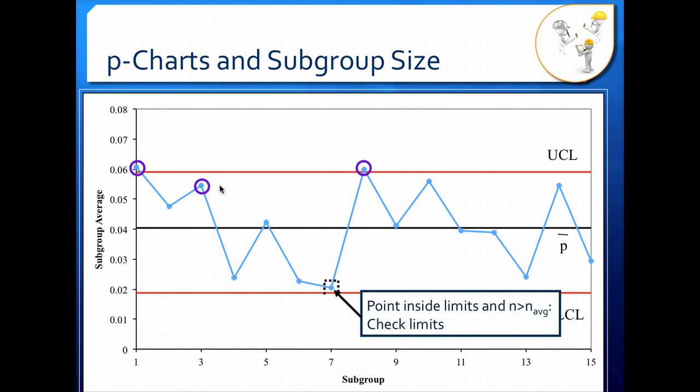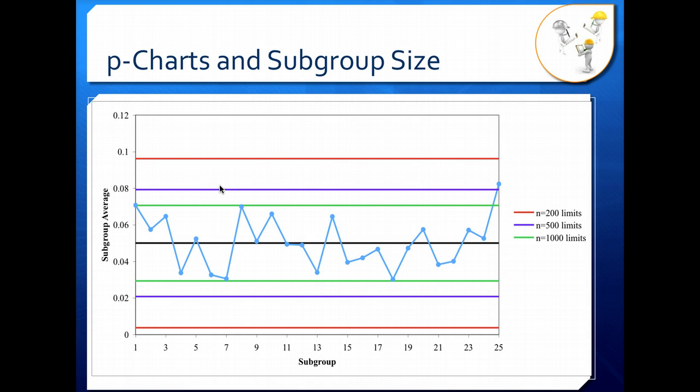That's one way to handle unequal subgroup size. It can get a little bit involved with the calculations and a little bit complicated. A slightly less complicated way to deal with unequal subgroup size is posting several different limits to your control chart. So here you can calculate the limits ahead of time and you can post limits for different subgroup sizes. We've got 200, 500 in the purple, and 1000 as our subgroup size in the green.